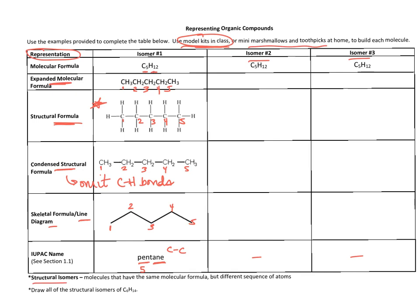So isomer number one here was pentane—we had five carbons bonded to each other in a continuous chain. You'll notice the definition down here of structural isomers. These are molecules that have the same molecular formula—so if you look up here, isomer number two C5H12, isomer number three C5H12, and isomer number one C5H12. So they all have the same molecular formula, but the key is the sequence is different. There's a different sequence of atoms.